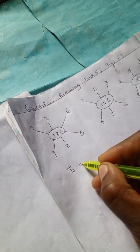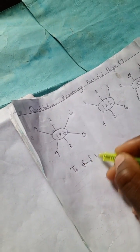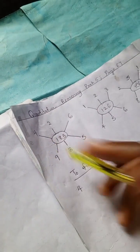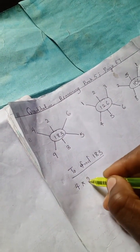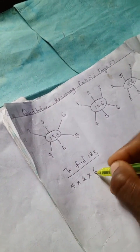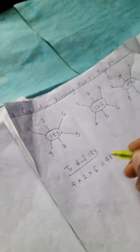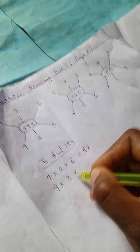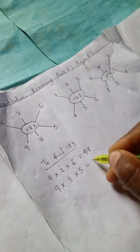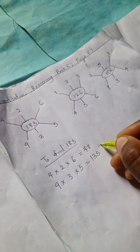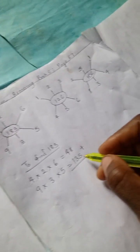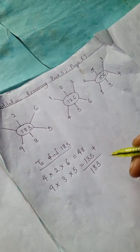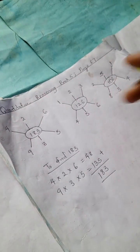To find 183, we're going to simply have 4 times 2 times 6, and we have 48. Next, we're going to have 9 times 3 times 5, and we have 135. So we're going to add them up together, and adding them up, we're going to have 183.